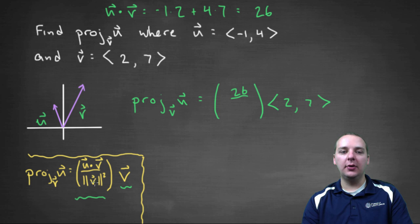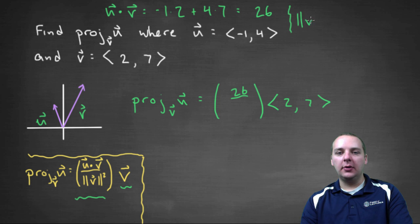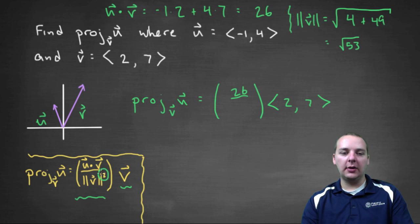And then we're going to take the magnitude of v squared. The magnitude of v would be the square root of two squared plus seven squared. So four plus forty-nine, which would be root fifty-three. But when you square the magnitude, it just gets rid of the radical. So we'll divide this by fifty-three.